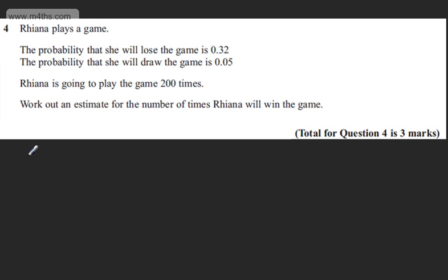All probabilities equal 1. So we can say 1 minus 0.32 minus 0.05 is going to be equal to 0.63.